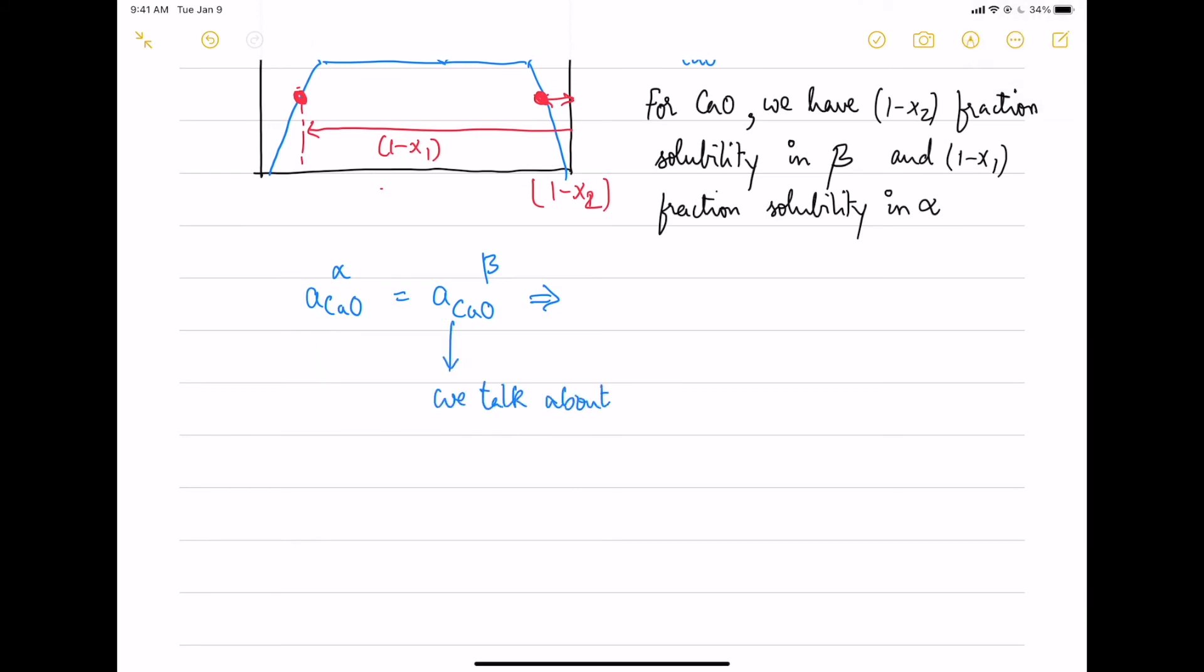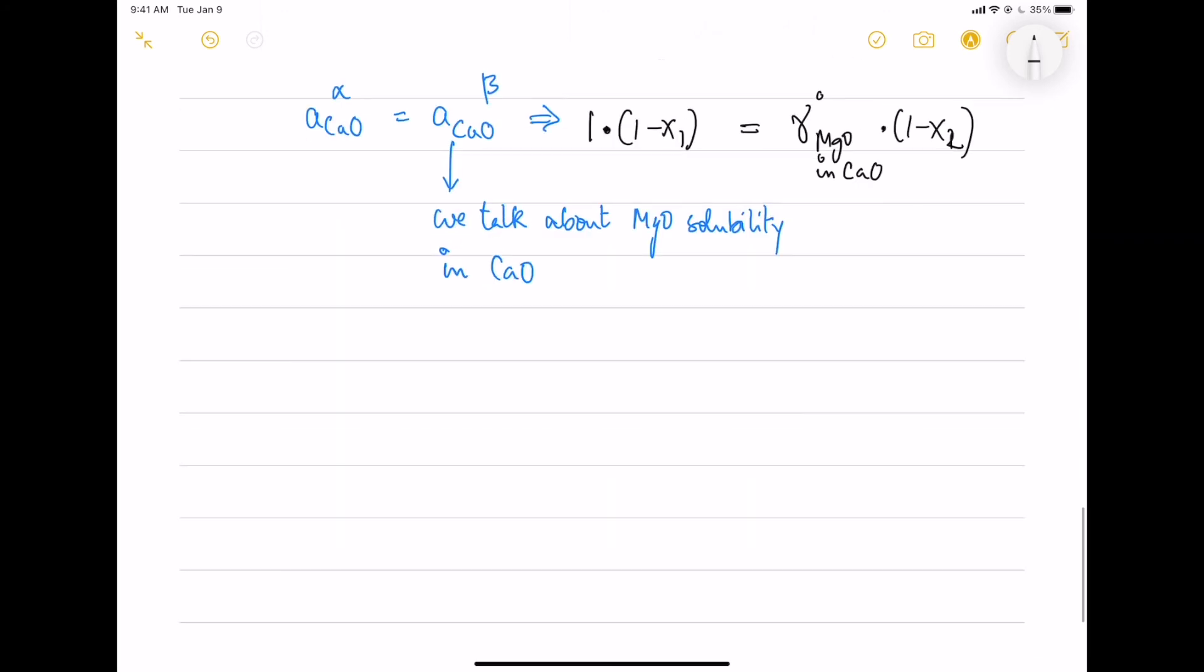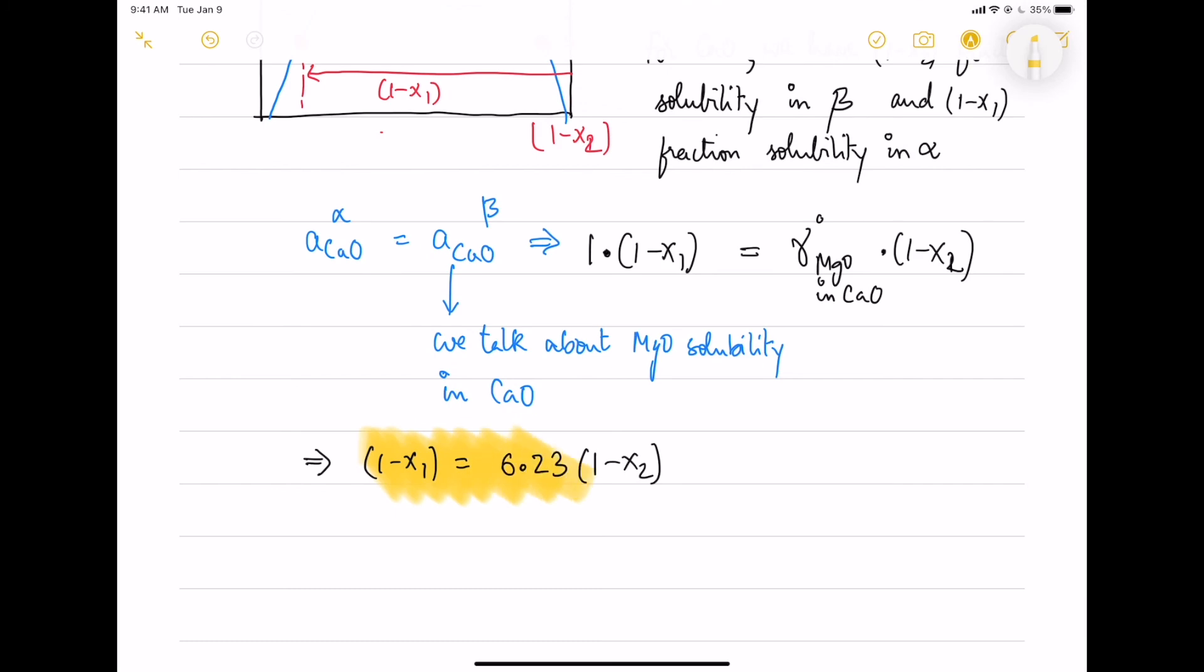So here again, we talk about the magnesium oxide solubility in calcium oxide. So here we use omega into 1 minus X1 equals to 6.23 into 1 minus X2. Please understand this. If you have questions, please comment below.